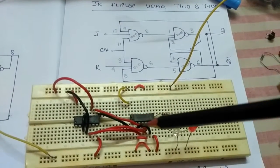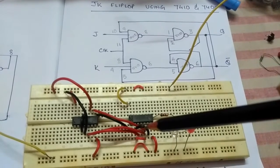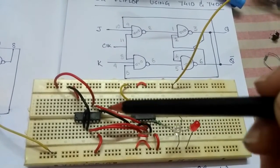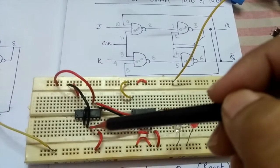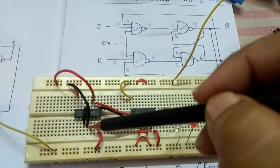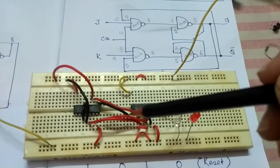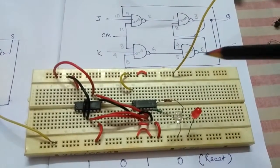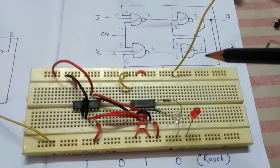Pin number 9 of the 7410 IC is connected to pin number 6 of the NAND IC, the two input NAND IC. From here, pin number 5 of this IC is being connected to pin number 3 of this IC as you can see from the figure.